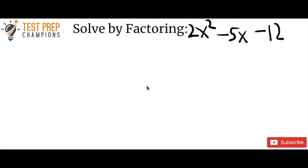2x squared minus 5x minus 12. Go ahead, pause the video, try this out. Note that I said to do it by factoring — don't use the quadratic equation, you've got to do it by factoring. Try this out, then we'll go over it.